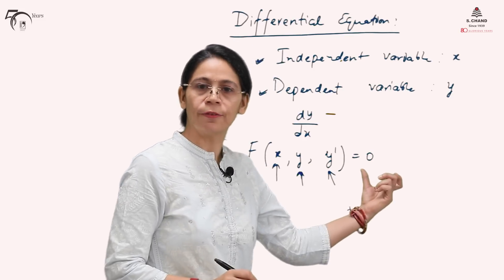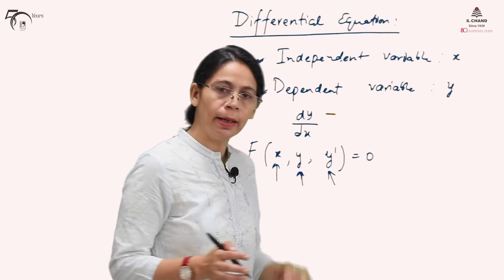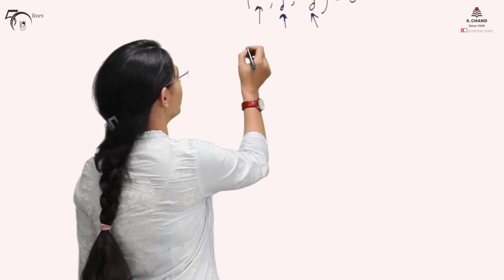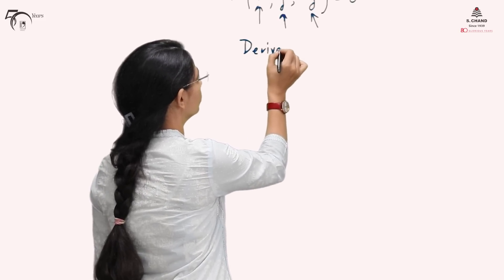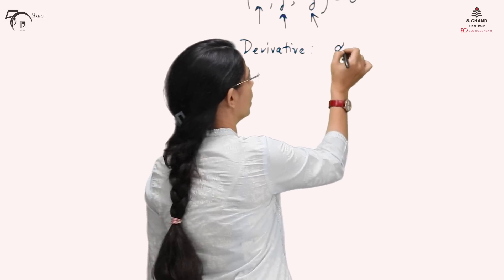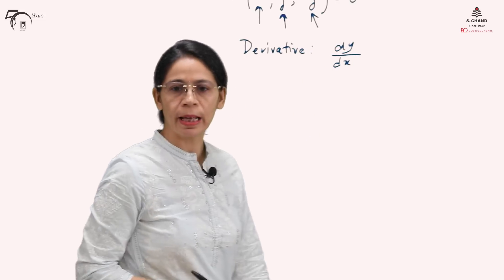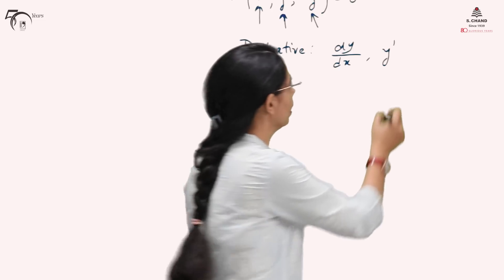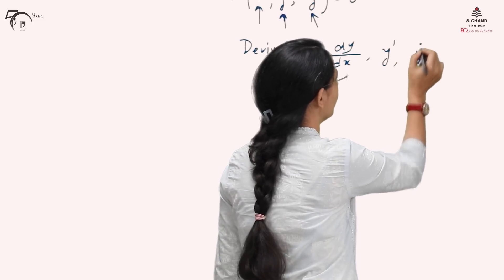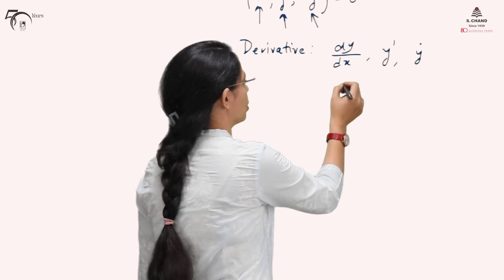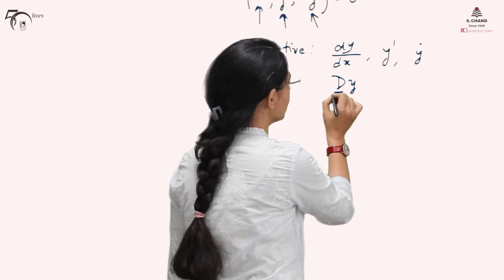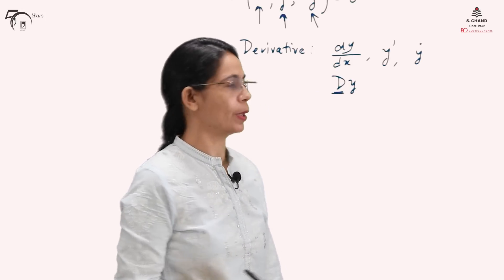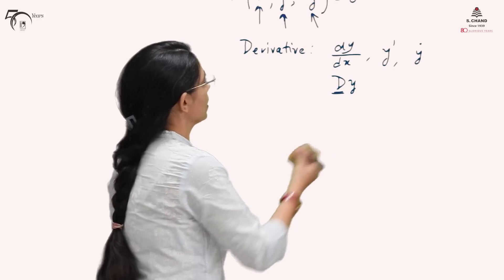This relation is called a differential equation. There are many ways to write the derivative. The first representation is dy/dx. It can also be written as y′ (y dash), or y· (y dot). Another representation is Dy, where D stands for d/dx. All these notations are used for writing a differential equation.